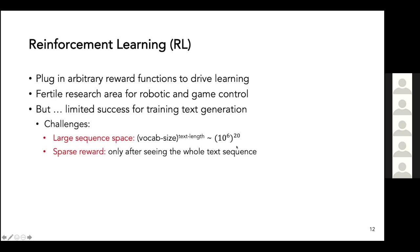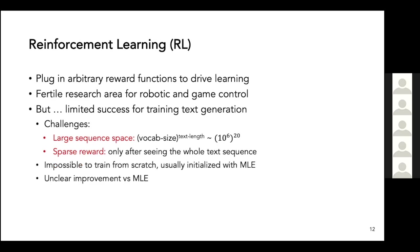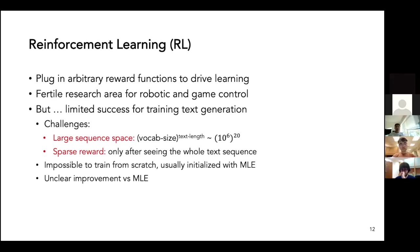The second challenge is sparse rewards. If we use the BLEU score as the reward function, we can only evaluate the reward score after we generate the whole text sequence, so the reward is very sparse — a whole sequence corresponds to only a single scalar reward. This makes learning very inefficient. As a result, with the current RL formulation it's usually impossible to train a text generation model from scratch, so we usually have to initialize the model with supervised learning like maximum likelihood estimation.